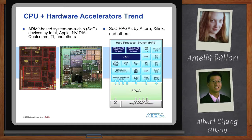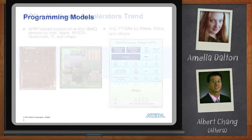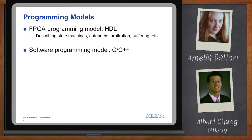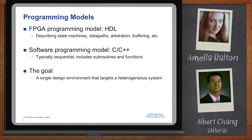Programming this combination of processor and hardware accelerators is a challenge. The FPGA programming model is vastly different from the software programming model. The FPGA programming model uses a hardware description language — HDL — typically written in VHDL or Verilog, where you describe your design's behavior cycle by cycle: state machines, data path construction, arbitration schemes, and buffering. The software programming model lets you program at a high level using C or C++, writing sequential code with subroutines and functions.